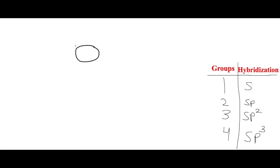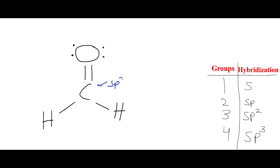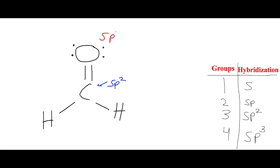Let's do another example. Say we have oxygen with two lone pairs, a double bond to carbon, and connected to two hydrogens. Starting with the carbon in the middle — it's connected to one, two, and three — three groups, so that's SP2. Now for this oxygen, it has one, two, and three — it's also connected to three groups, so it's also SP2.